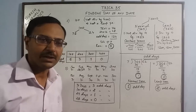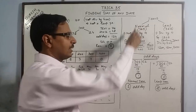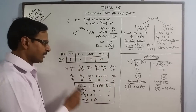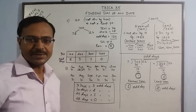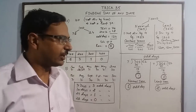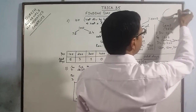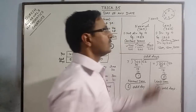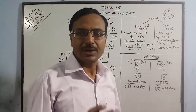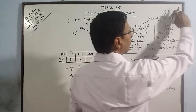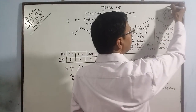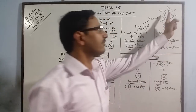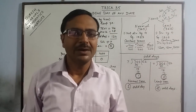So we have 3 important concepts for finding the day of any date: first, the number of odd days in a normal year and a leap year; second, the century years table up to 400 and their odd days; and third, the month-wise number of odd days. The final concept to remember is the mapping — 0 odd days is Sunday, 1 is Monday, 2 is Tuesday, 3 is Wednesday, 4 is Thursday, 5 is Friday, and 6 is Saturday.